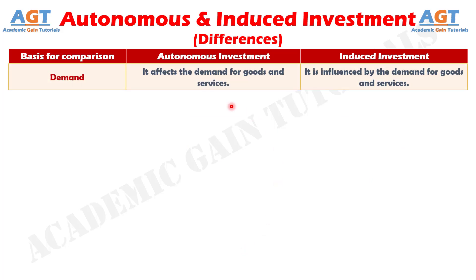Difference Number 6: Autonomous investment is not influenced by consumer demand for goods and services. In fact, it affects the demand. Whereas demand is one of the factors which influences induced investment — that is, if consumption demand rises, investment is made to fulfill the demand by supplying the goods and services.